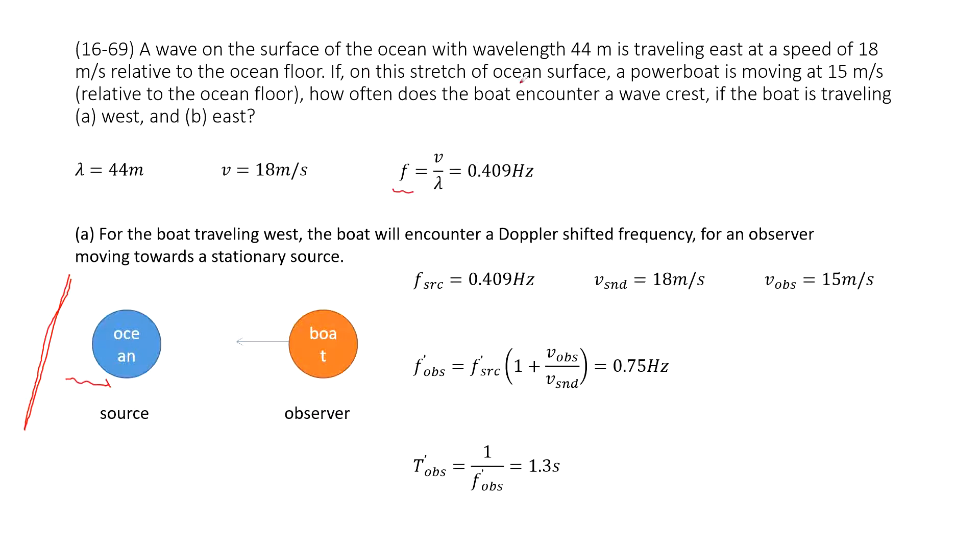Now if we see a boat, this boat is observed is moving at 15 meters per second. So now this v observed is given. And then how often does the boat encounter a wave if the boat is traveling west or east?